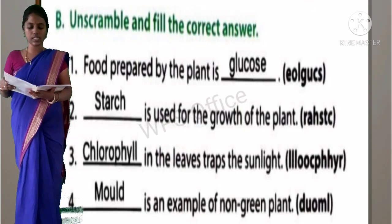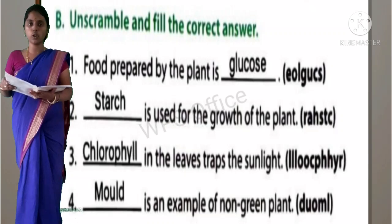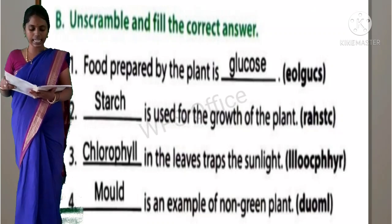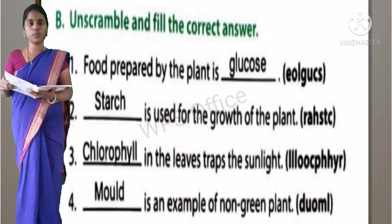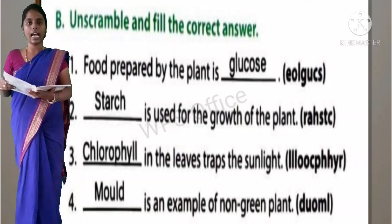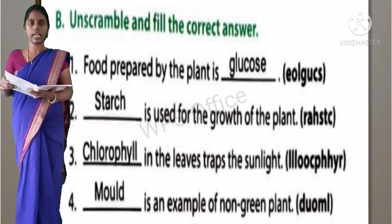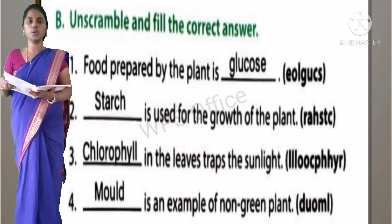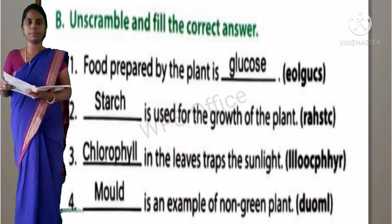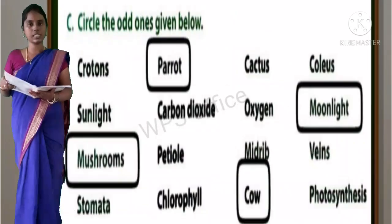Fourth one: Dash is an example of a non-green plant. Answer is mould - M-O-U-L-D. Section C: Circle the odd ones.